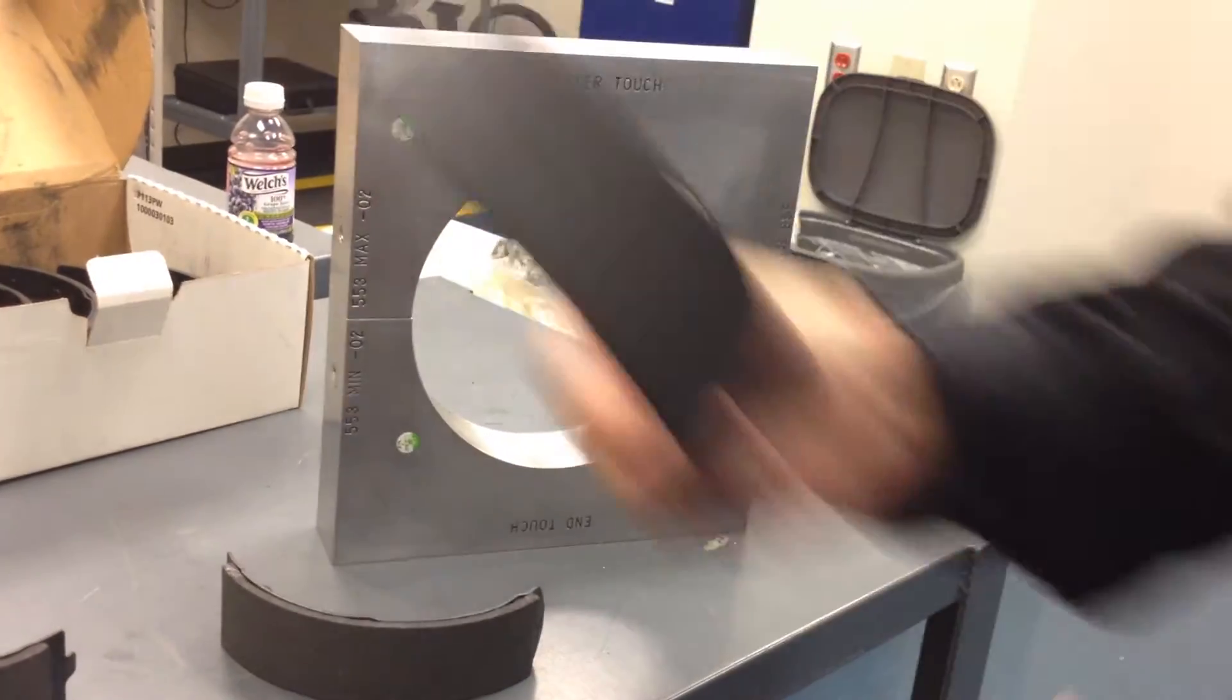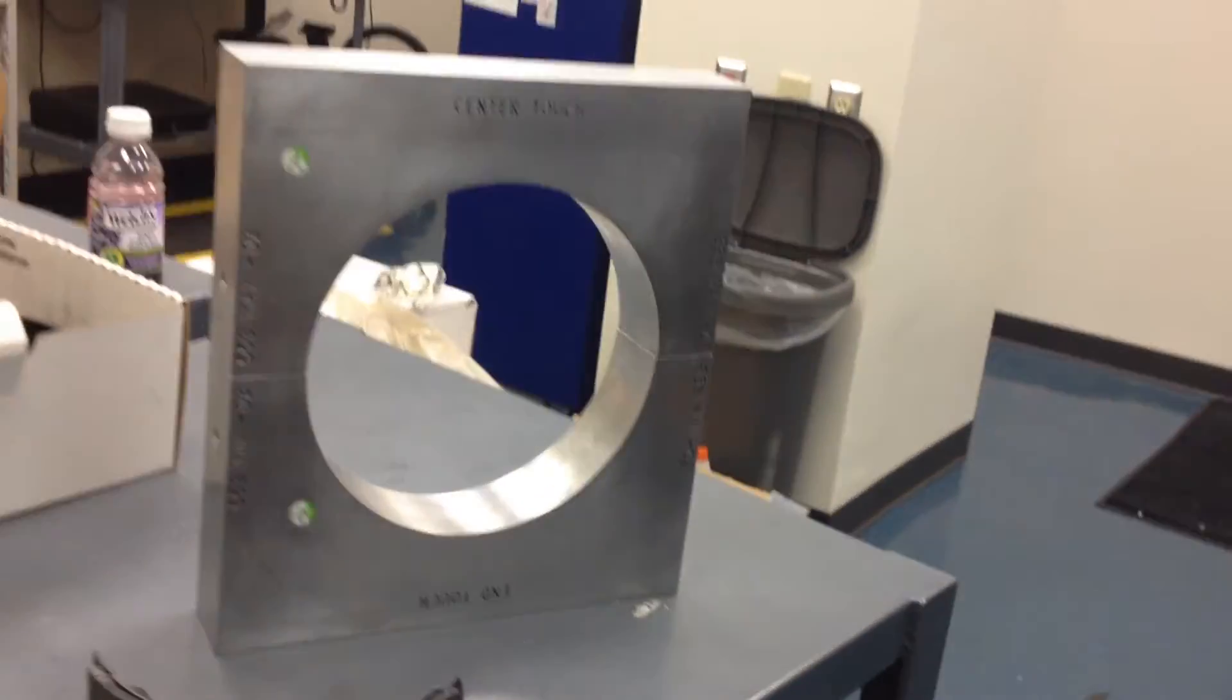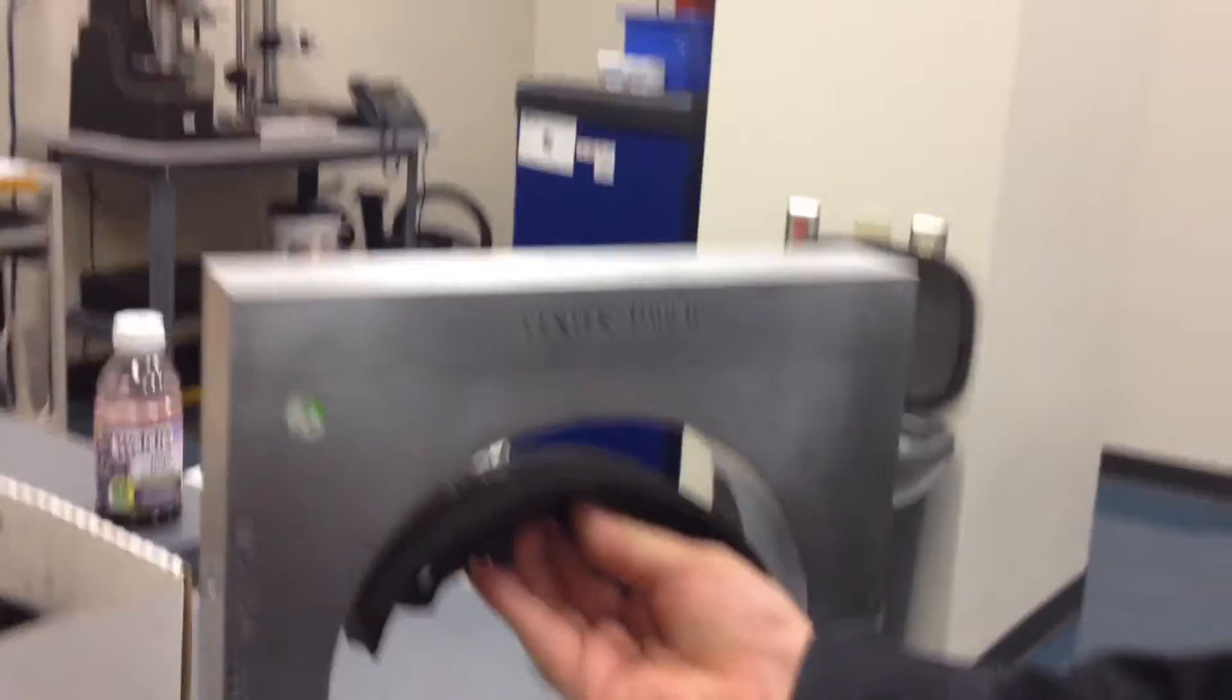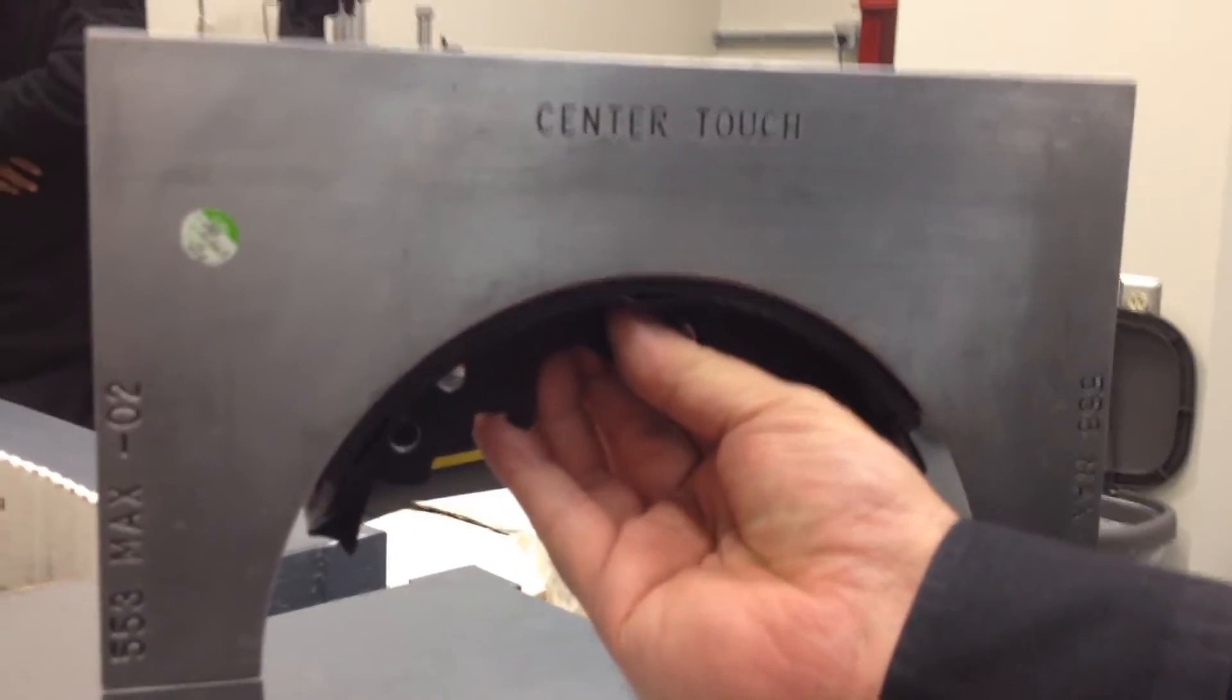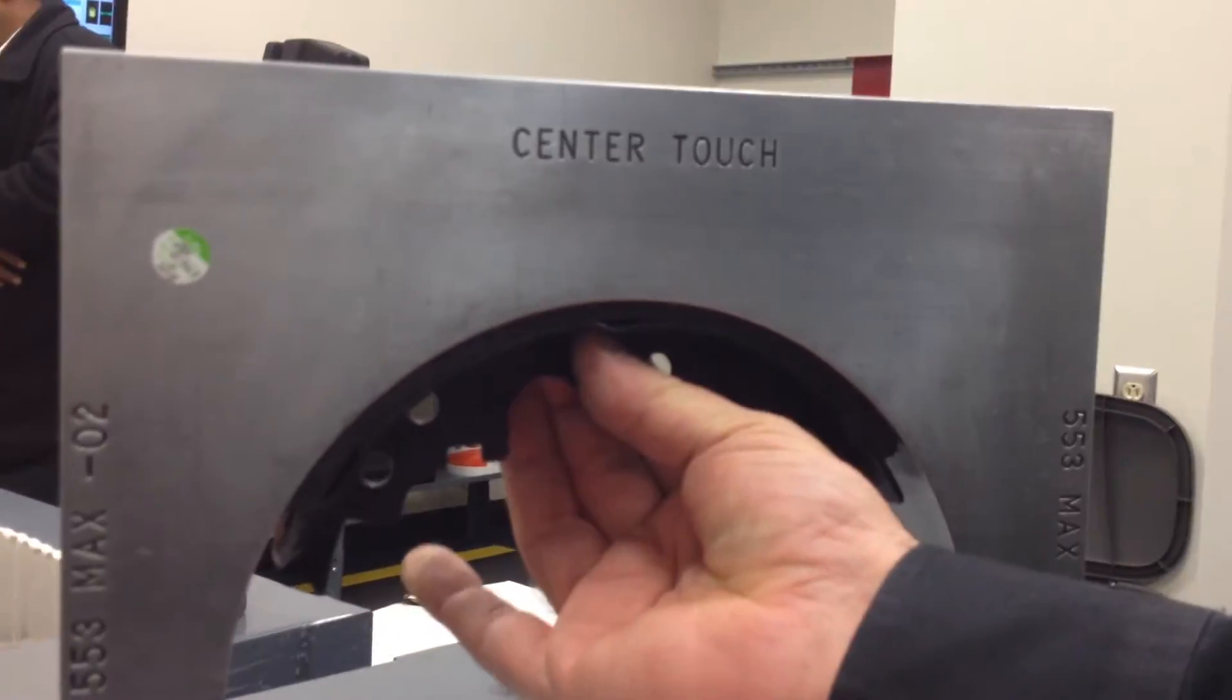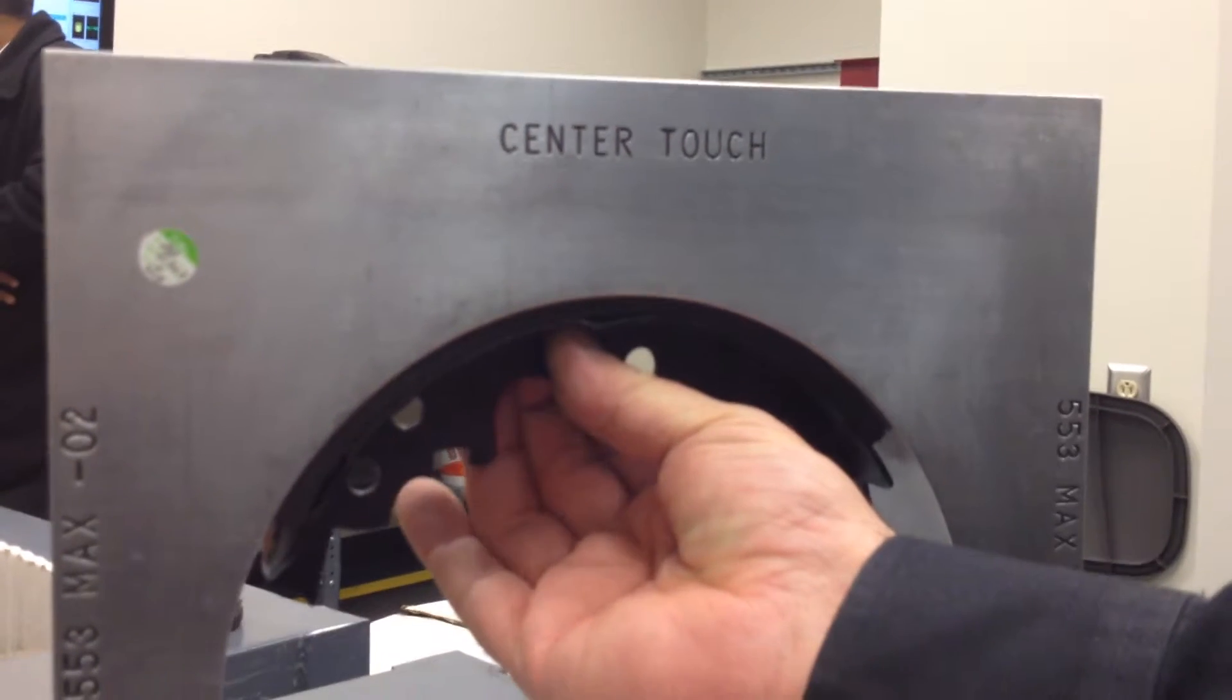Here's one that has been ground too small. We can put it on the center touch side of the gauge, and it's going to look like a good one because it's touching in the center.